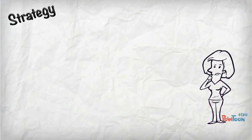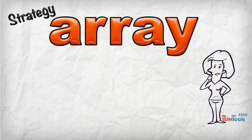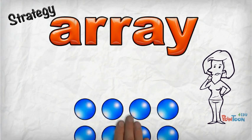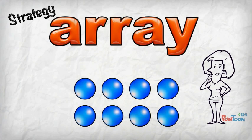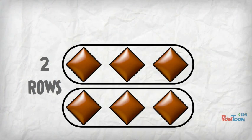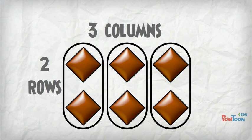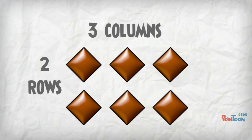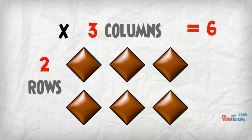Here's a great strategy we can use. When we multiply or divide, we can use an array to help us. An array is a group of objects set out in rows and columns so they are easy to count. This array has 2 rows and 3 columns. You can count it and see 6. And you can multiply any array out. 2 rows times 3 columns is 6.